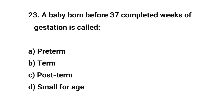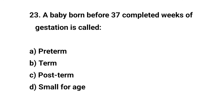Question number twenty-three. A baby born before 37 completed weeks of gestation is called? The right answer is A: preterm.